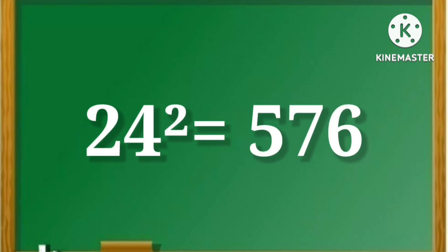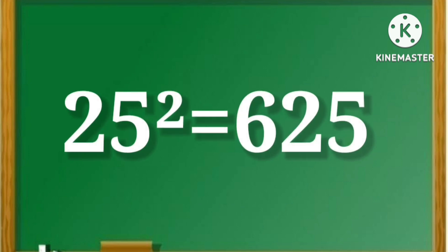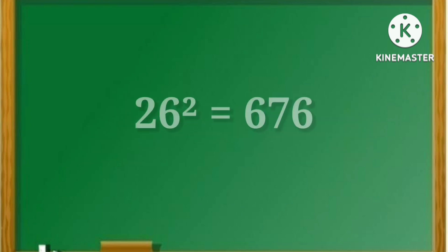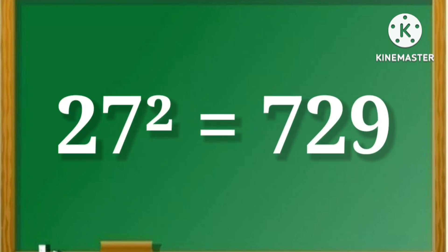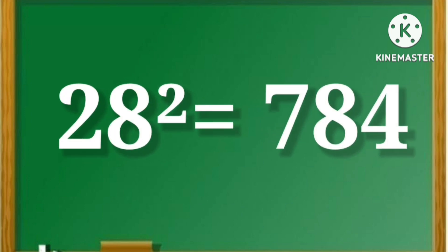24 square is equal to 576. 25 square is equal to 625. 26 square is equal to 676. 27 square is equal to 729. 28 square is equal to 784.